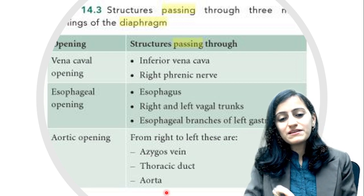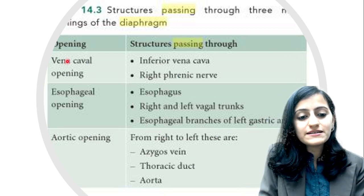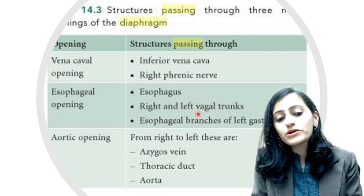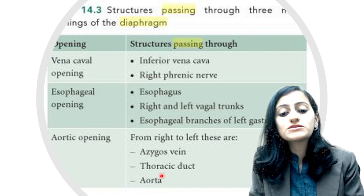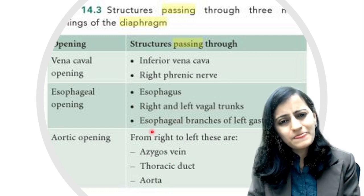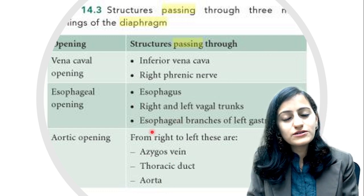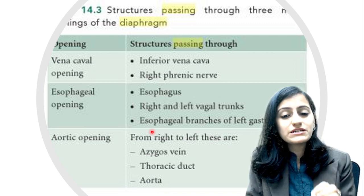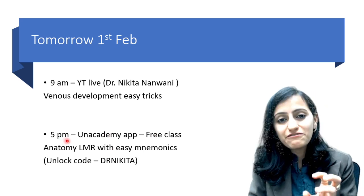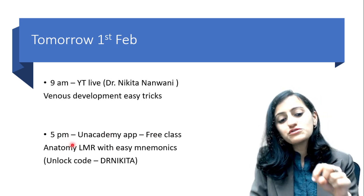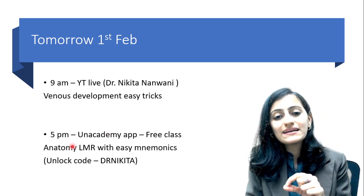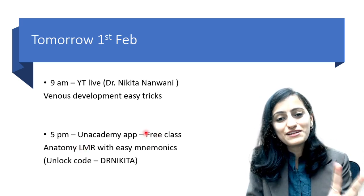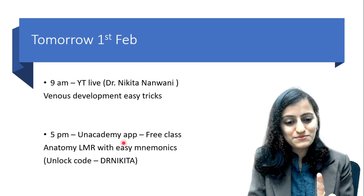The complete table of diaphragmatic openings — through the vena cava opening, what goes along with it; through the esophageal opening; through the aortic opening, what goes apart from the aorta — those are also very important. I'll give you detailed mnemonics for all the diaphragmatic openings in tomorrow's 1st February free live class on the Unacademy app at 5 p.m. The link is in the description and comments — enroll for free. It's going to be a very productive hour. Trust me on that.